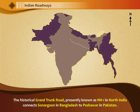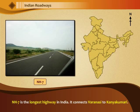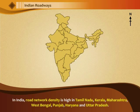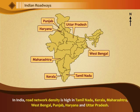The historical Grand Trunk Road, presently known as NH1, in North India, connects Sonargaon in Bangladesh with Peshawar in Pakistan. NH7 is the longest highway in India; it connects Varanasi to Kanya Kumari. In India, the road network density is high in Tamil Nadu, Kerala, Maharashtra, West Bengal, Punjab, Haryana and Uttar Pradesh.